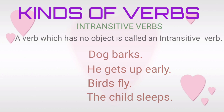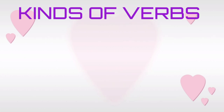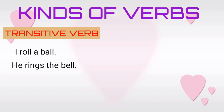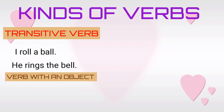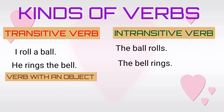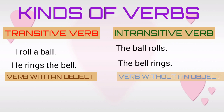Look at the following table and make a clear idea about what is a transitive verb and what is an intransitive verb. Transitive verb — verb with an object: I roll a ball. He rings the bell. Intransitive verb — verb without an object: The ball rolls. The bell rings.